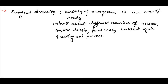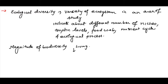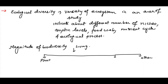We need to understand certain data about the magnitude of biodiversity. If we are talking about the distribution among plants and animals, animals make around 70% of the total biodiversity, plants make around 22%, and the leftover 8% is for other groups. In animals, out of that 70%, around 70% is taken up by insects alone.